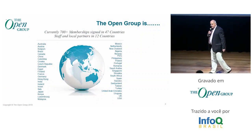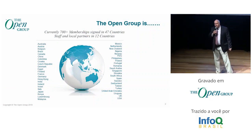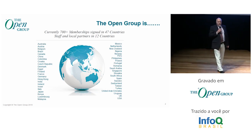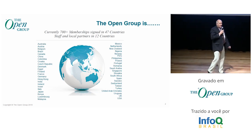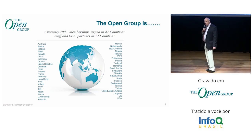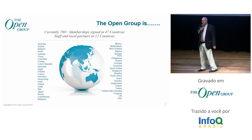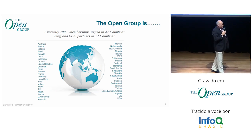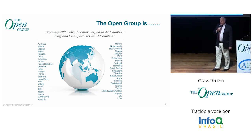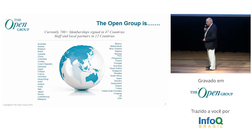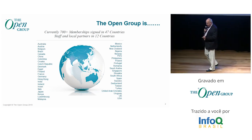The Open Group is an international consortium. We now have over 700 membership organizations in many countries around the world. We're very proud of our global nature and the fact that we really do have participation from just about everywhere, apart from Antarctica. So if anyone knows anyone in Antarctica that wants to join, we'd love to get the last continent on our map.